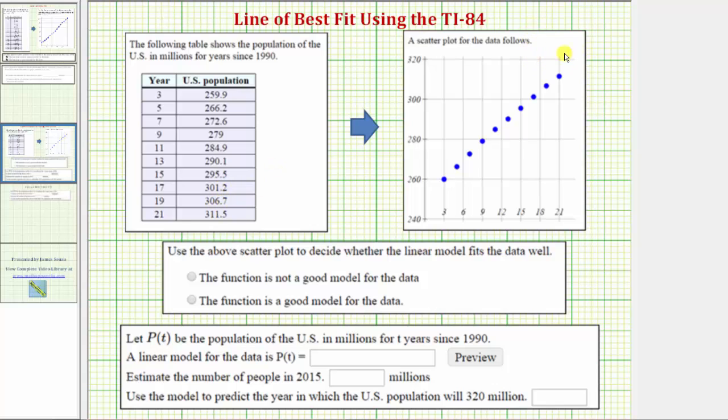A scatter plot for the data is shown here, where the horizontal axis is the number of years since 1990 and the vertical axis is the population in millions. The first question is: use the above scatter plot to decide whether the linear model fits the data well.